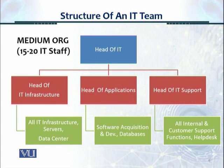For a medium-sized organization, the functions are condensed together. There's a head of IT, but only three people reporting to that head. There's the head of IT infrastructure looking after all the infrastructure, servers, and data center. There's a head of software applications looking after software acquisition, development, and databases. And all IT support and maintenance, including internal customer support and the help desk, would be looked after by a head of IT support.